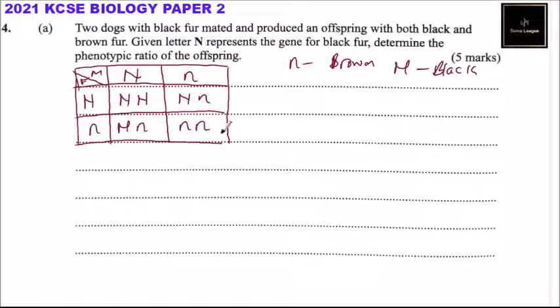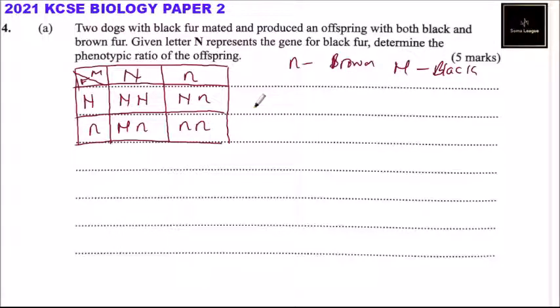So you can see here — we have three dogs that have the black color, and one that doesn't have it; it is completely brown.